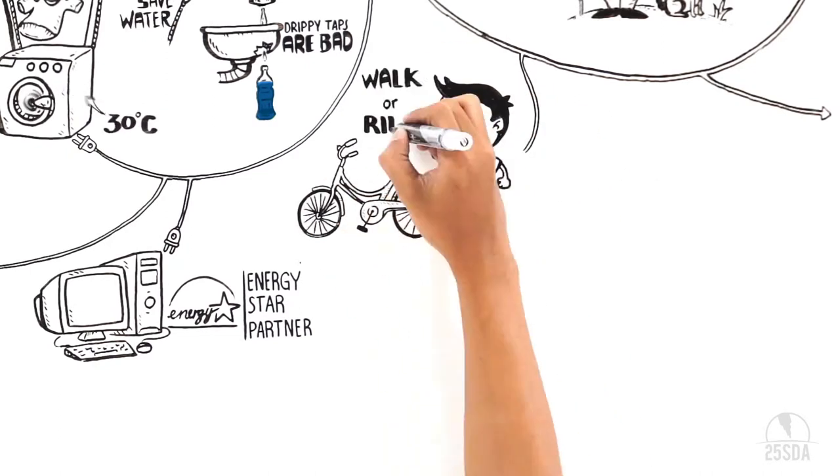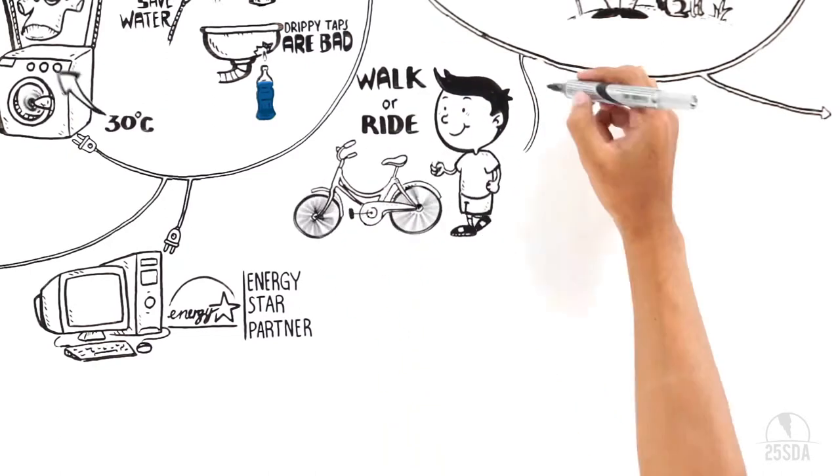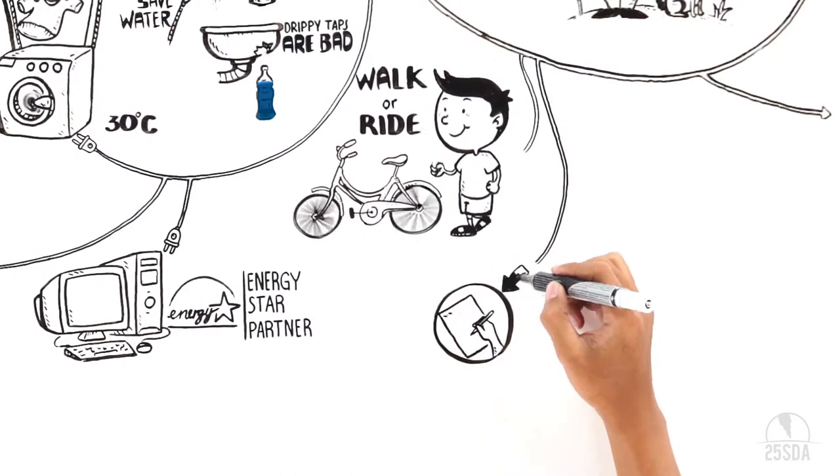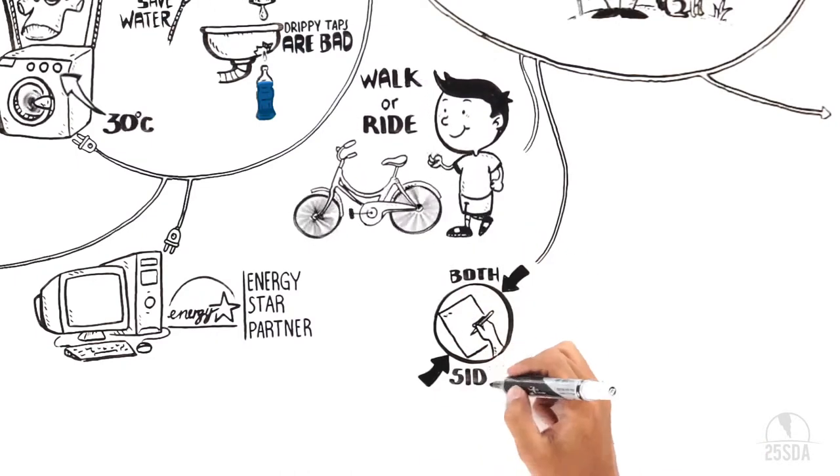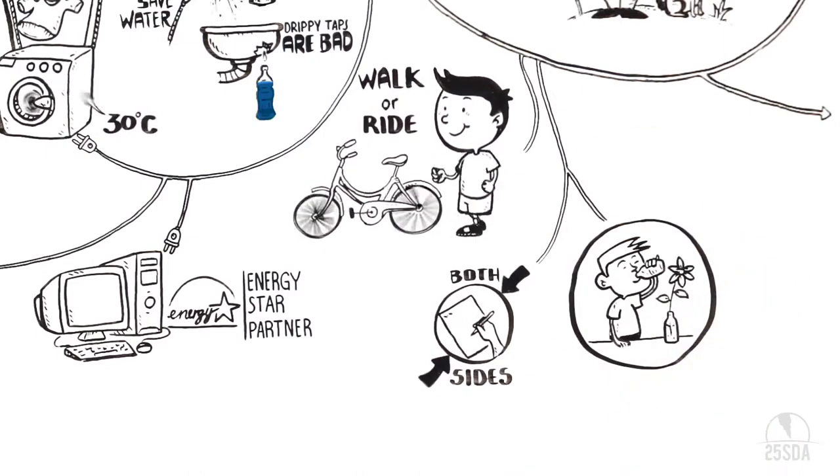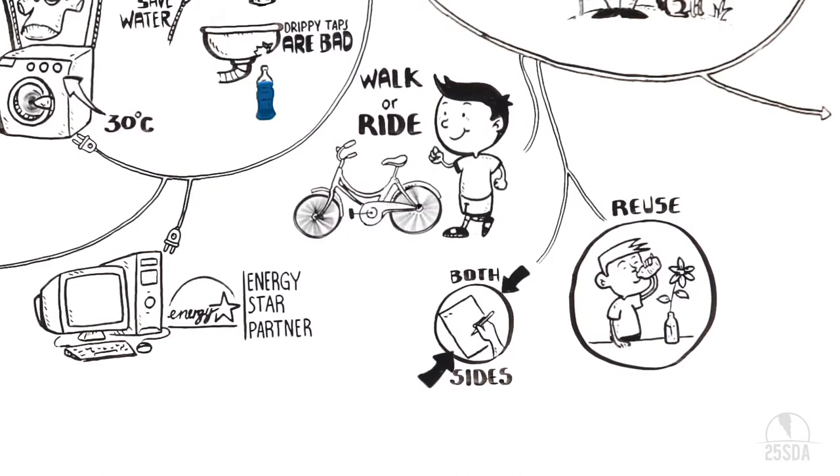And how about riding a bike instead of driving? Being energy smart means doing little things - little things that are important, like using both sides of a piece of paper. And if you can reuse something instead of throwing it away, please do.